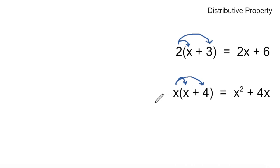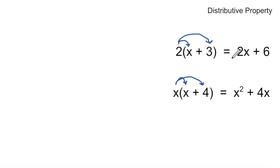So that's a quick review of the distributive property. And we'll see later that we can do the reverse of this — we can take x squared plus 4x and factor out an x. This is the factored form, where we factored out an x. Or in this first case, we factored out a 2 from 2x plus 6 — in other words, we divided each of these two terms by 2 and wrote it outside of the parentheses. So we'll do that in reverse in a future video.